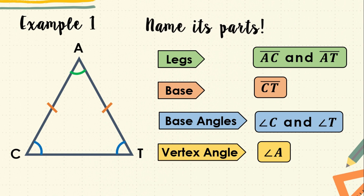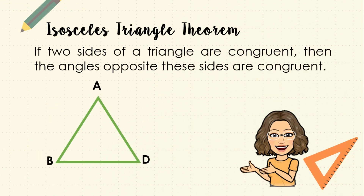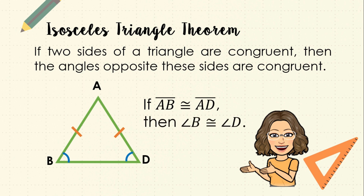The base angles are angle C and angle T, while the vertex angle is angle A. Great job! We can now move on to the isosceles triangle theorem. This theorem states that if two sides of a triangle are congruent, then the angles opposite these sides are also congruent. For example, in triangle ABD, if side AB is congruent to side AD, then the angles opposite these two sides are also congruent.